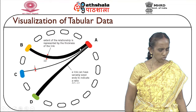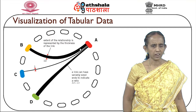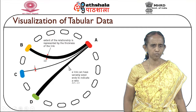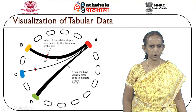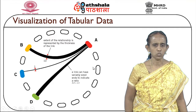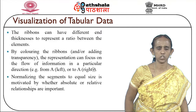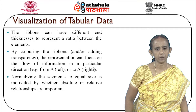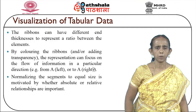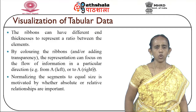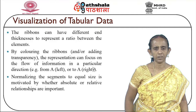In circos, the extent of the relationship is represented by the thickness of the link. The link can have variably sized ends to indicate a specific ratio. By adding transparency to the ribbon, the representation can focus on the flow of information in a particular direction. Normalizing the segments to equal size is motivated by whether absolute values or relationships are more important.